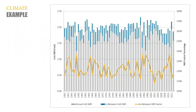I wanted to talk through an example because talking about vague monthly factors is not something that is easily grasped. This is an example using the White River Basin.